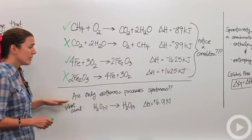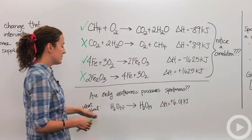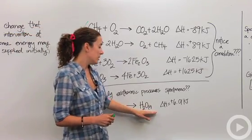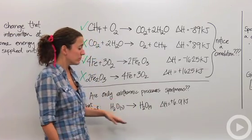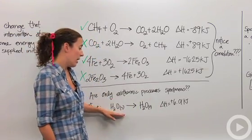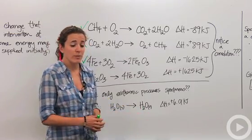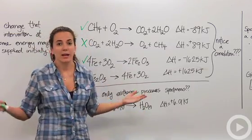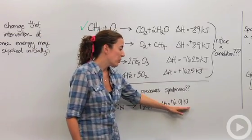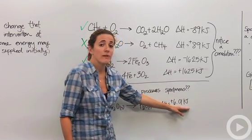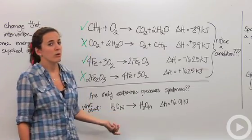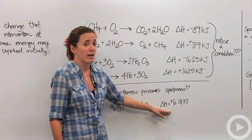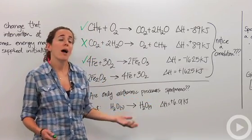What about this process? We have solid water, ice, and liquid water. We know at ordinary conditions that solid ice will melt. If I put an ice cube on this table, it's going to melt. Without me doing anything, I can just leave it there and it'll melt. But this actually requires 6.01 kilojoules of energy. So we just disproved our whole theory. Spontaneity is not just dependent on enthalpy or delta H. It must be dependent on something else.